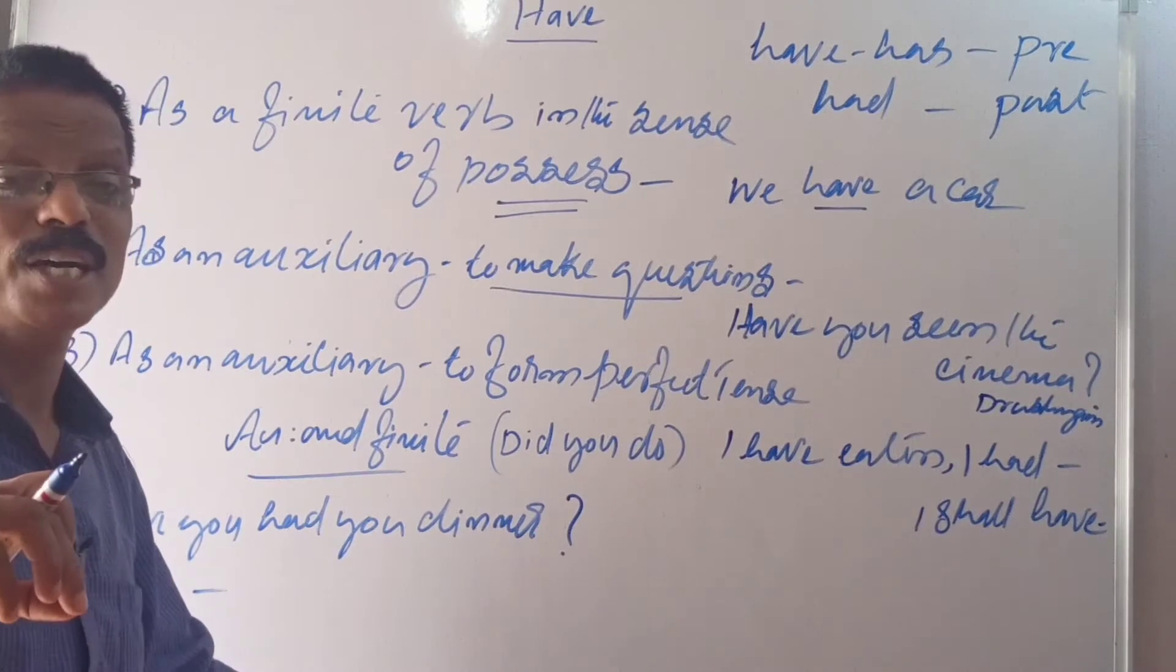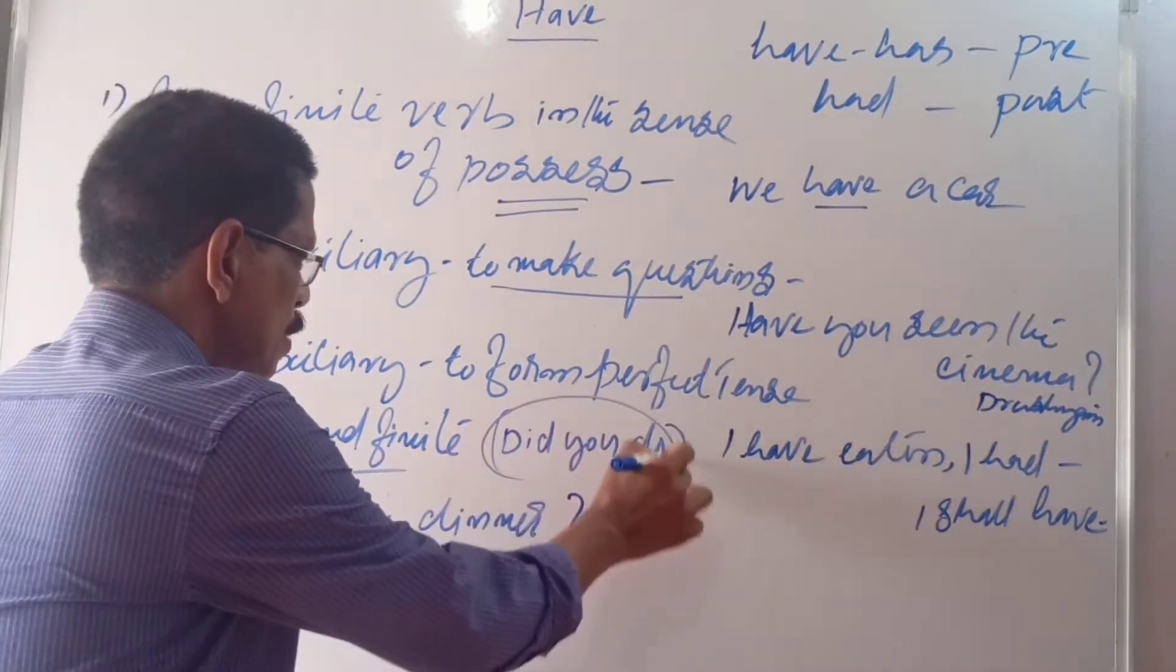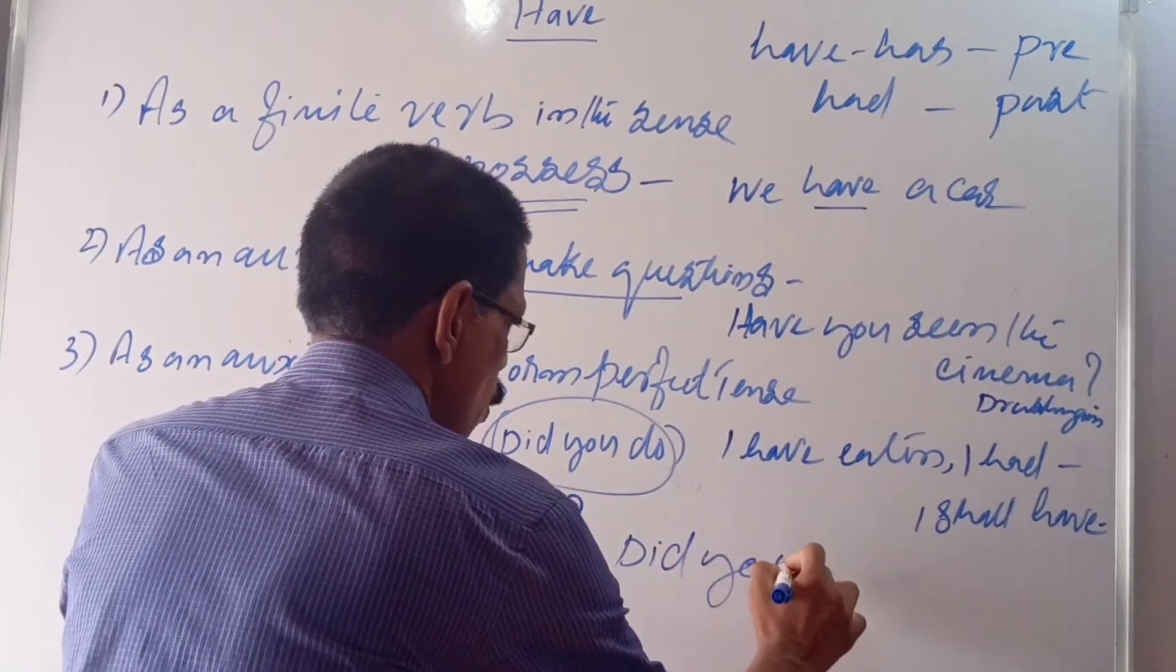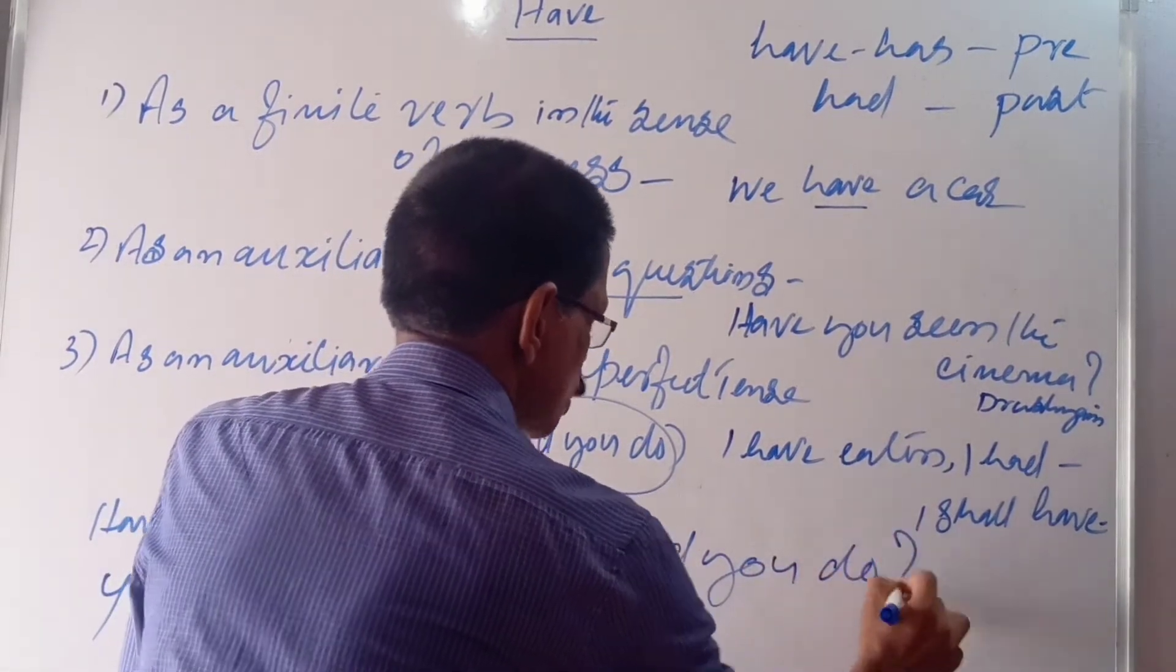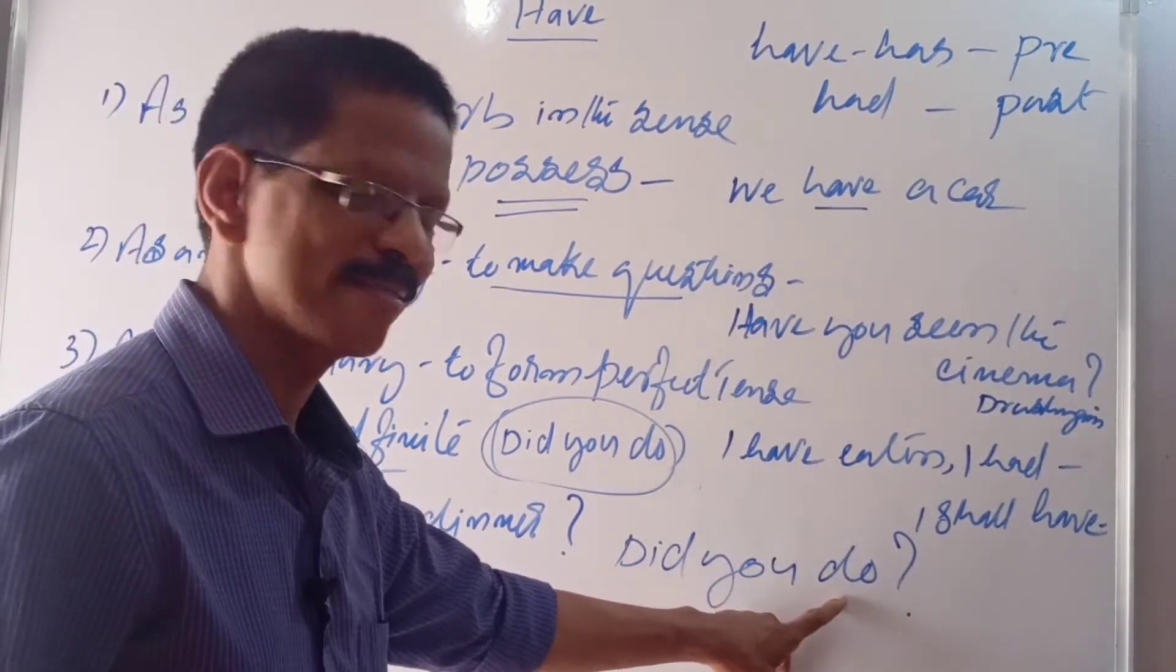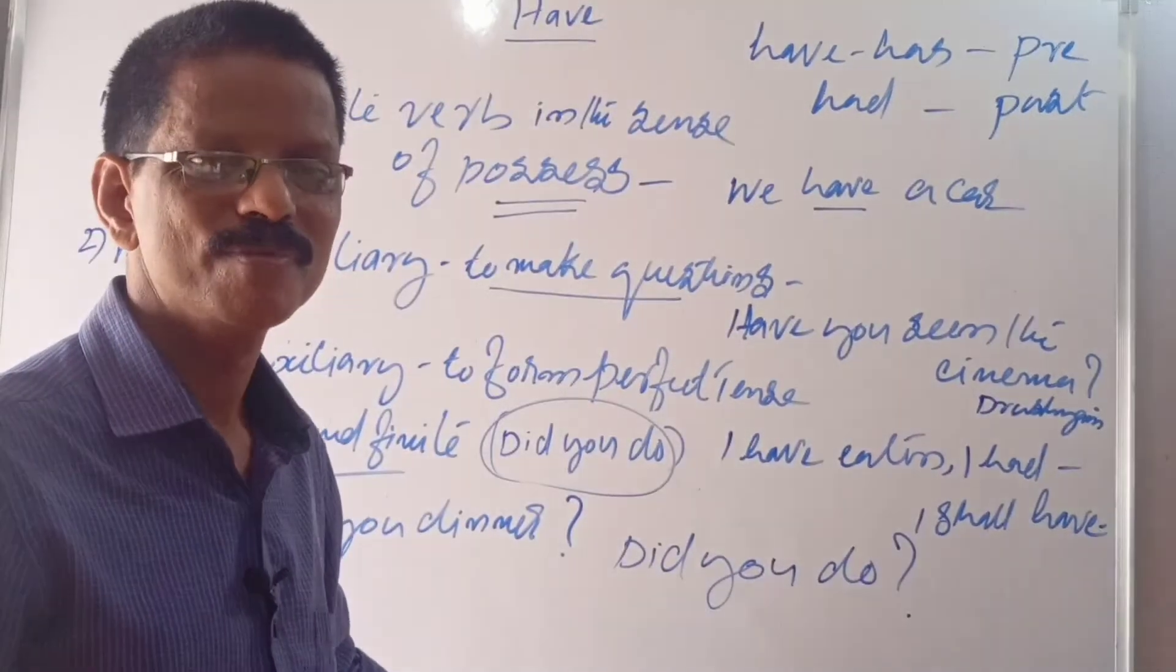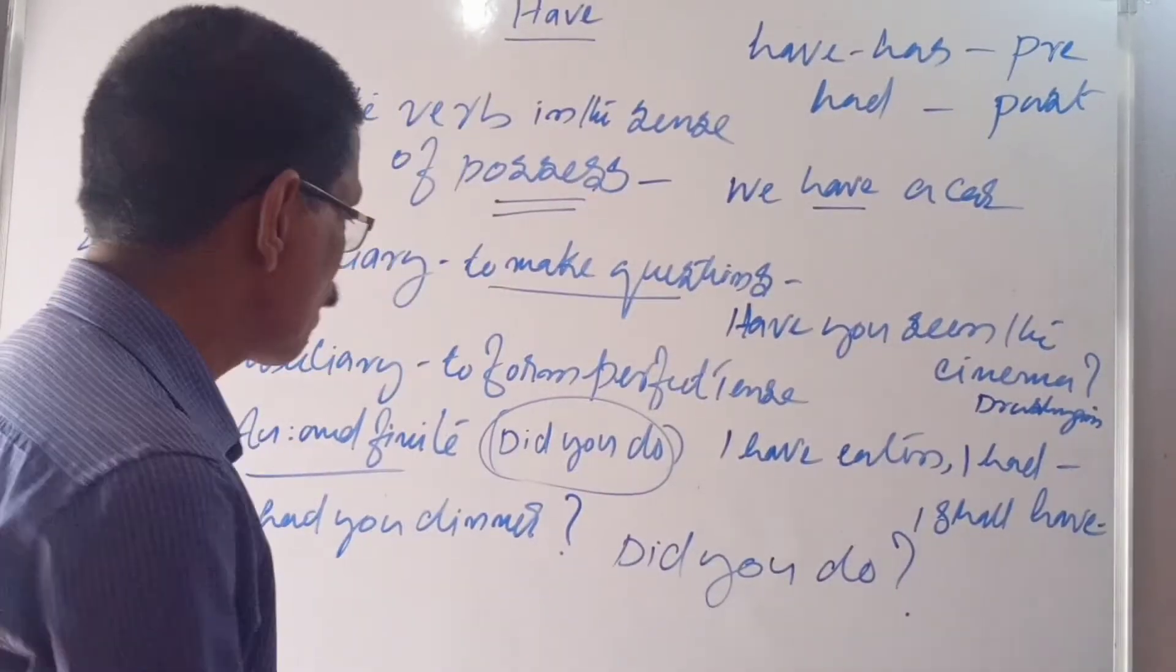These three are very simple to understand. But sometimes it will be asked the same sentence as finite and auxiliary. Take for example the example of do that we saw yesterday. Did you do the exercises? Did you do the homework? This is auxiliary, this is finite. I did do, I did it.